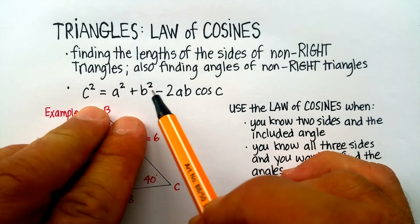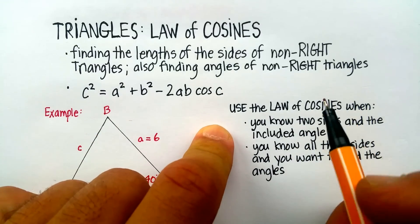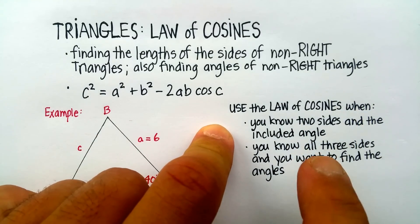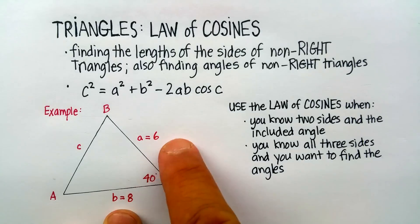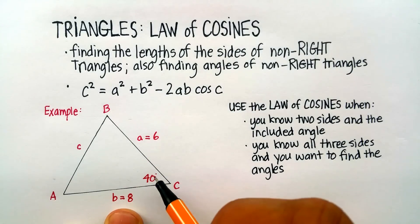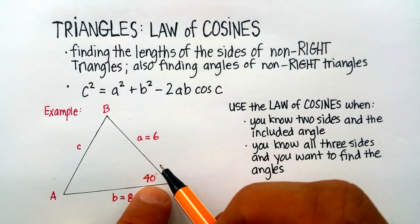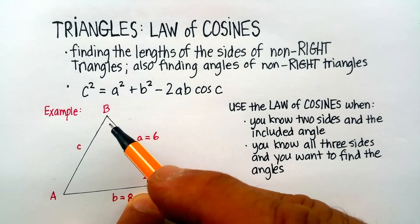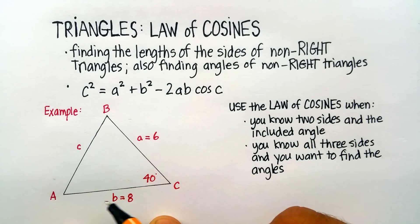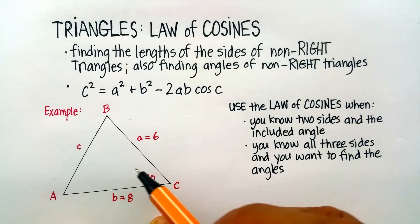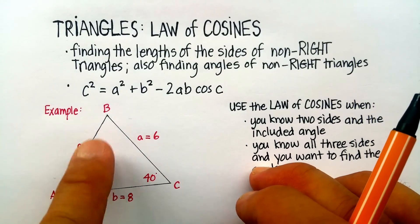There are a couple of restrictions. You can use the law of cosines when you know two sides of a non-right triangle and what's called the included angle — the included angle has to be in between the two sides you know. The other time you can use the law of cosines is when you know all three sides of the triangle and you want to figure out what the angles are.